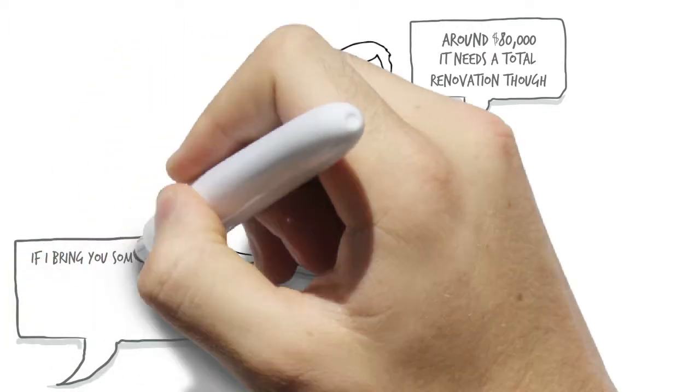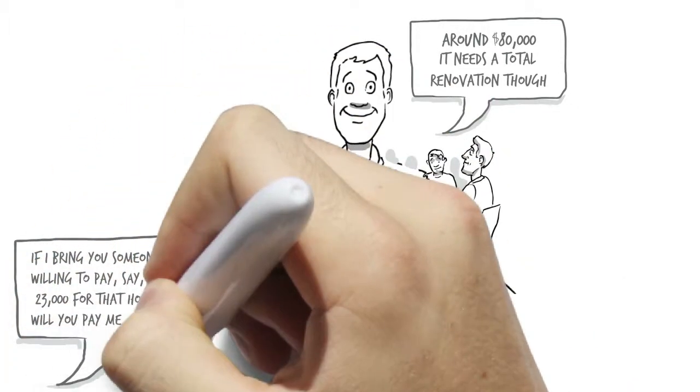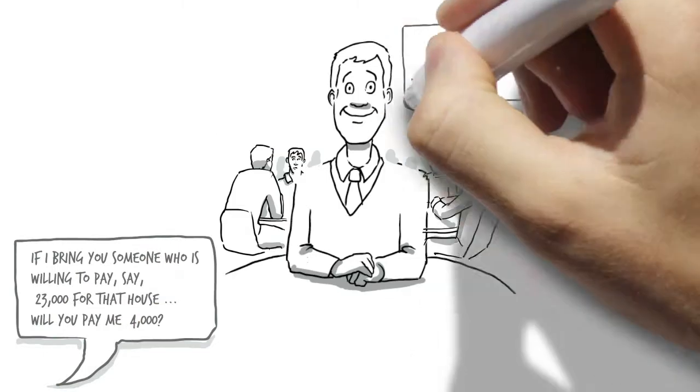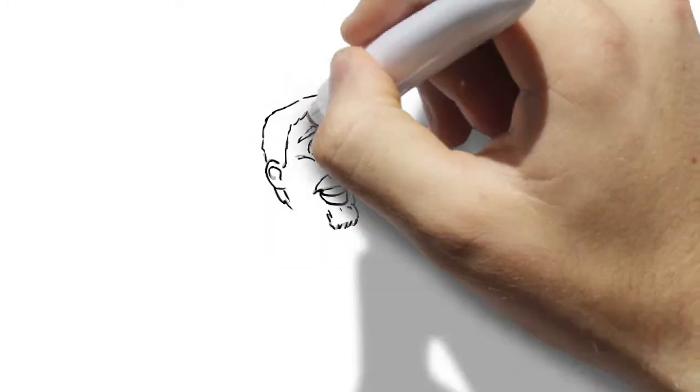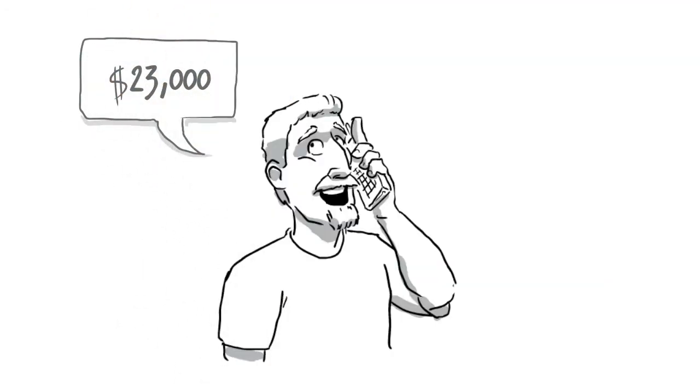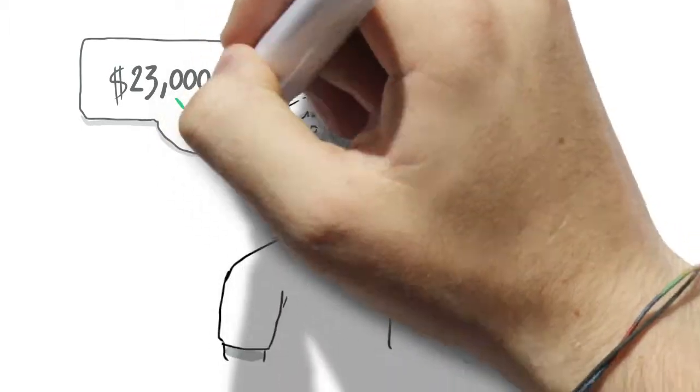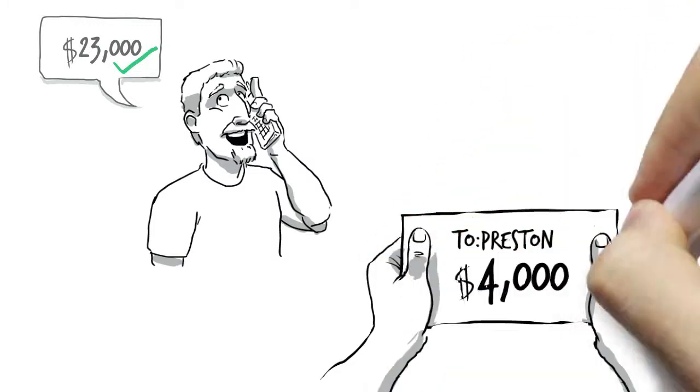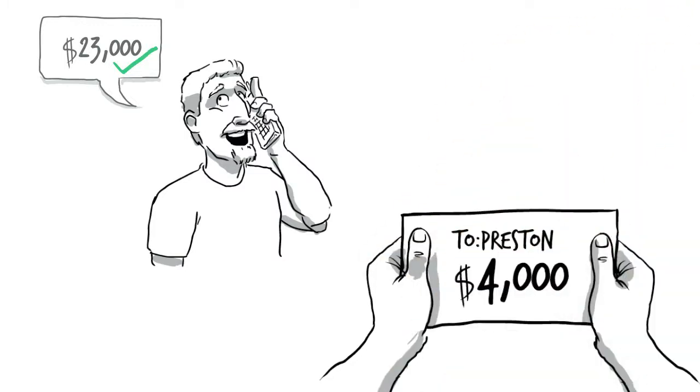Nineteen thousand dollars I asked? How much is it worth fixed up? Around eighty thousand dollars he responded, but it needs a total renovation. That's when the light bulb came on. I said listen, if I bring you someone who's willing to pay say twenty three thousand dollars for that house, will you pay me four thousand dollars? Of course he replied. So I called four people in my city who I knew were landlords and real estate investors, and these people are everywhere right now. I told them about the house. One of them was thrilled and agreed to pay me twenty three thousand dollars for it that very day, sight unseen. He couldn't believe the deal he was getting.